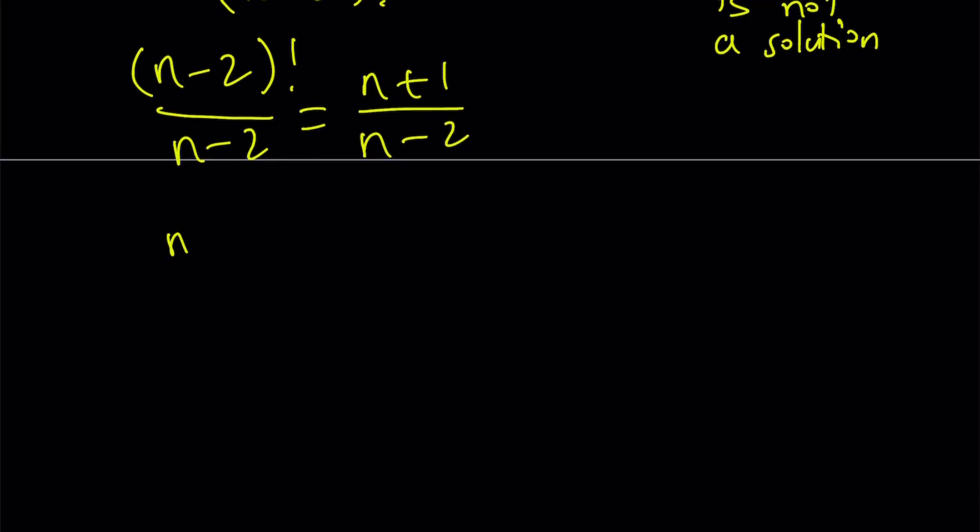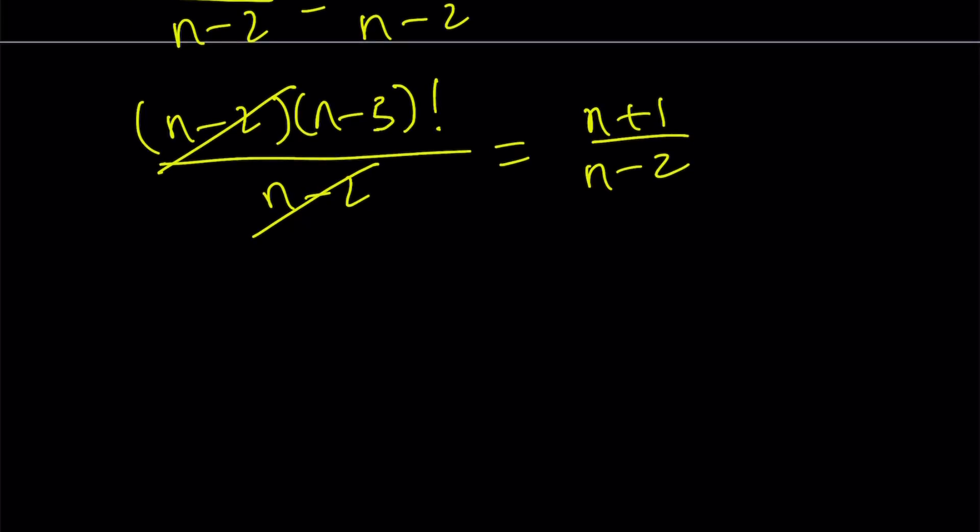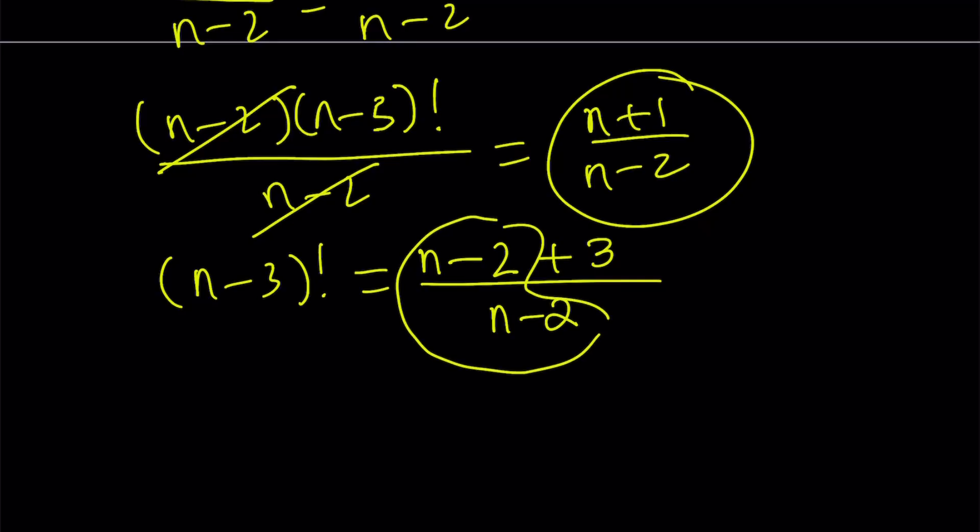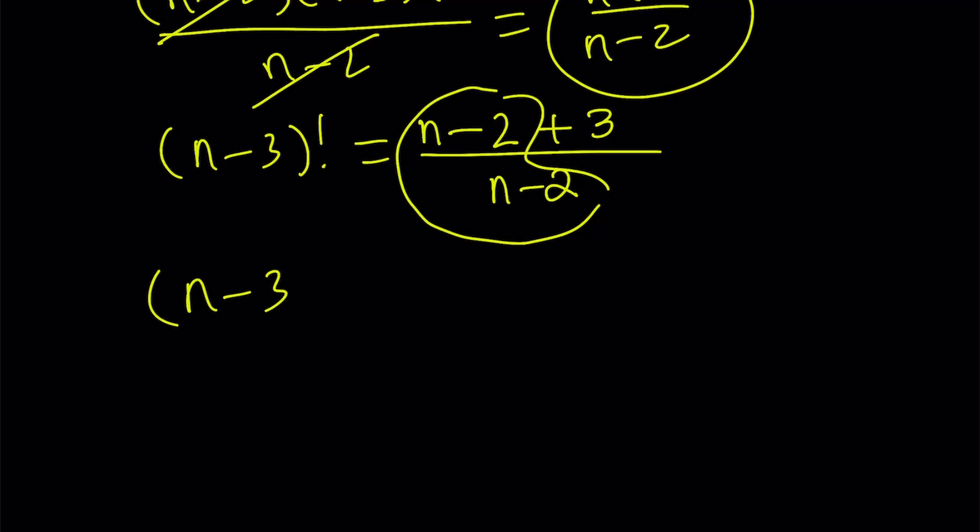When you expand this, this is going to become n minus 2 times n minus 3 factorial. n minus 2 cancels out, and we end up with another factorial. For n values greater than or equal to 3, n minus 3 factorial is an integer. Therefore, the right hand side also needs to be an integer. I can manipulate the numerator. I'm writing n plus 1 as n minus 2 plus 3 to make it look like the denominator. I can break it down as n minus 3 factorial equals 1 plus 3 divided by n minus 2.